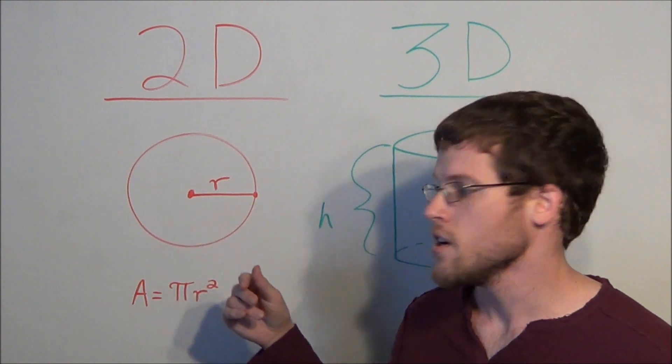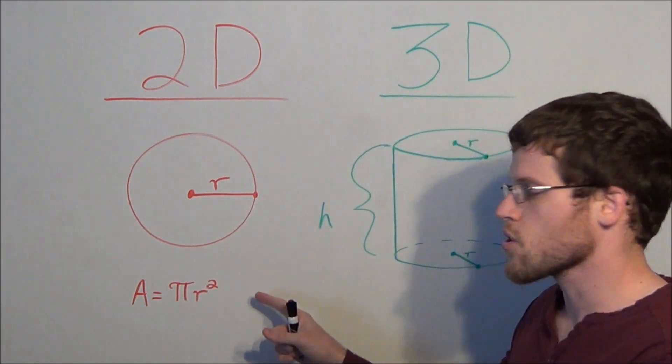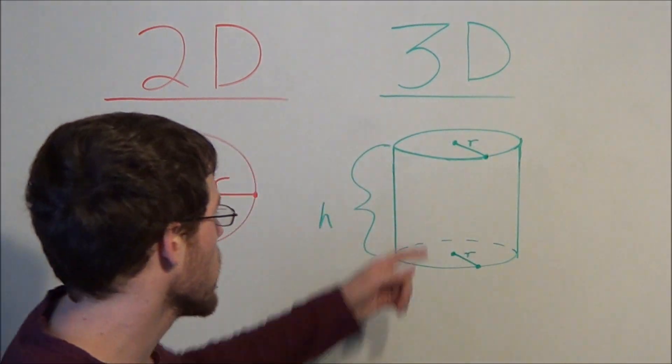When we have some circle with radius r, the area of the circle is pi r squared. We want to use this equation to help derive an equation for the volume of a cylinder.